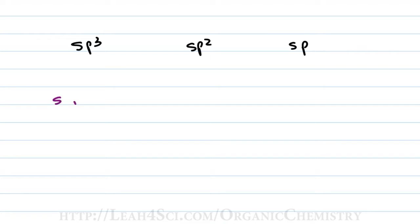The sp3 hybrid is made of s, p, p, and p. So if we have one s over four total orbitals, that gives us 25% s character. That's one over four. The sp2 hybrid is made of one s and two p. So if we divide one s by three for sp2, we get a total of 33% s. And finally, the sp hybrid is made of an s and a p orbital. And that means if we divide one s by two orbitals, we get a total of 50%.